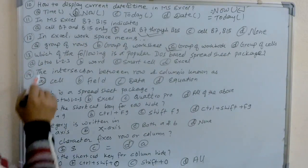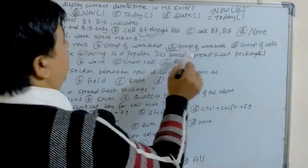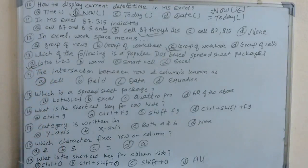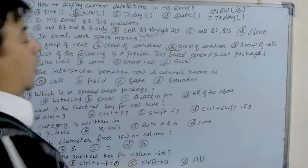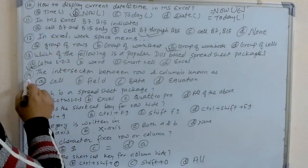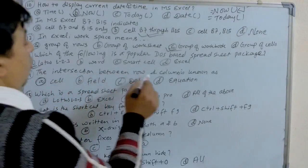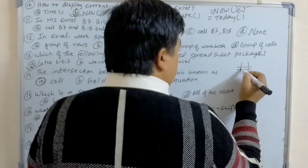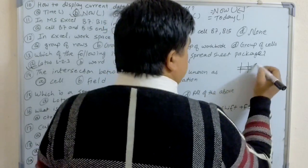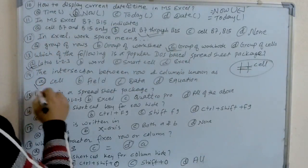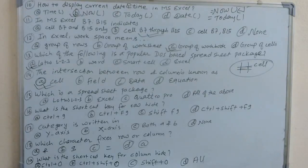Which of the following is a popular DOS-based spreadsheet package? The answer is Lotus 1-2-3 — it is a popular DOS-based spreadsheet package. Next: the intersection between a row and a column is known as a cell. So the answer is A — cell.